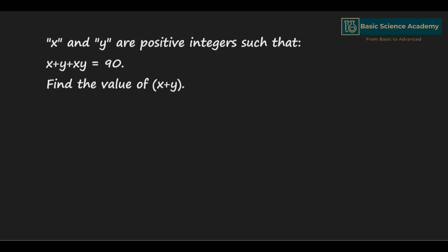In this video we are going to solve the question: x and y are positive integers such that x plus xy equals 90. Find the value of x plus y. We can rewrite this equation as x plus xy plus y equals 90.